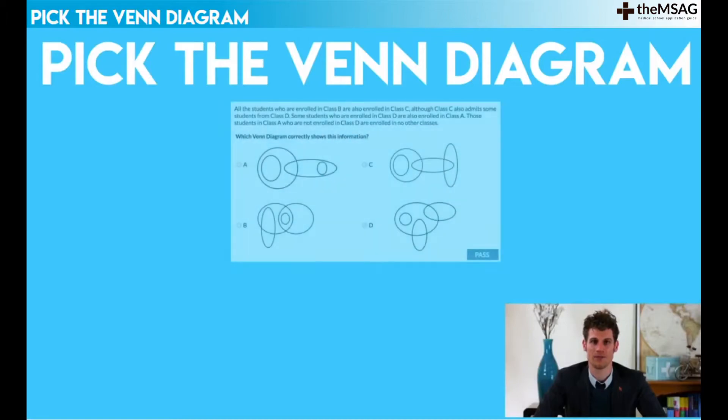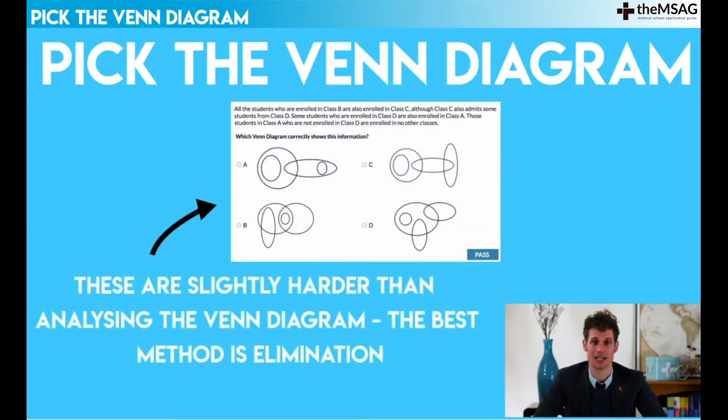Pick the Venn diagram. These are slightly harder than analyzing the Venn diagram. The best method is elimination, so I would recommend that you spend between 40 to 60 seconds on this style of question.